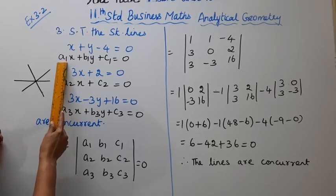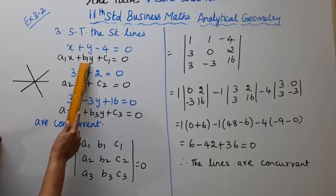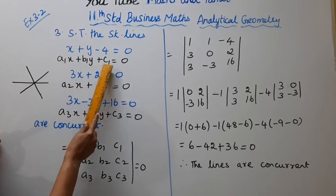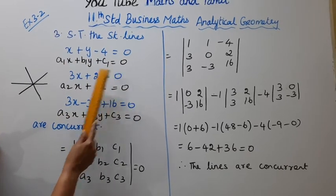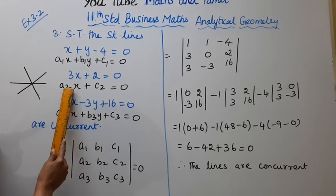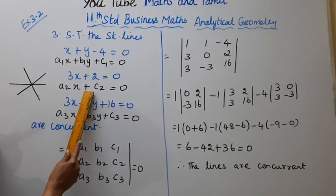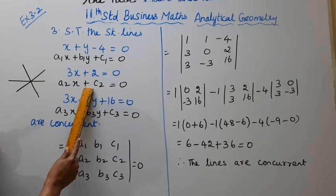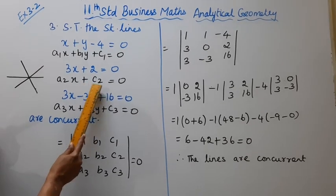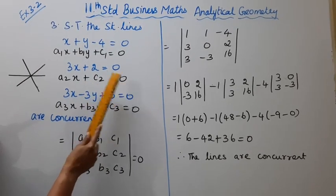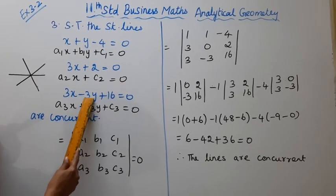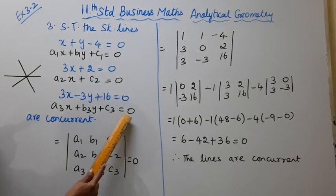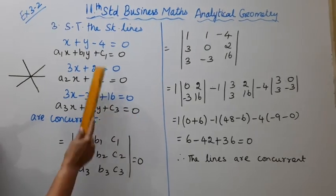So, the general form of the three lines: a1x plus b1y plus c1 equal to 0, a2x plus b2y plus c2 equal to 0, and a3x plus b3y plus c3 equal to 0.